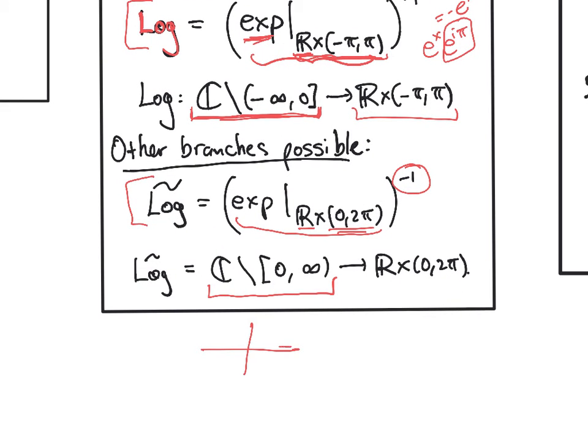So here we're missing this line, and so we map the plane minus the non-negative real numbers, and we're mapping them onto this strip.